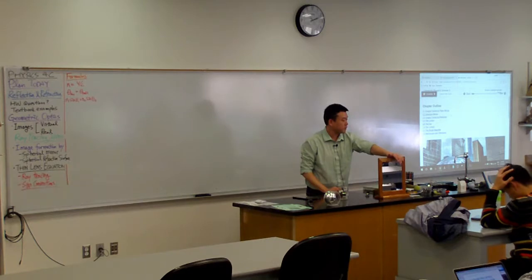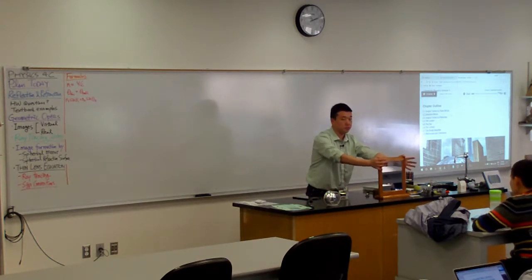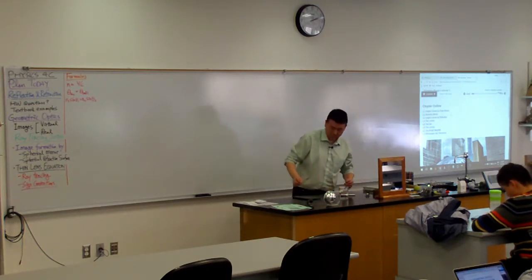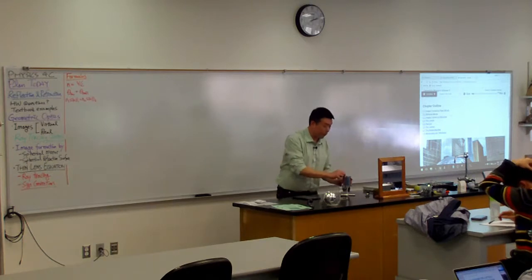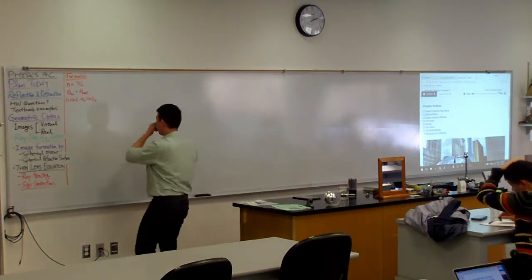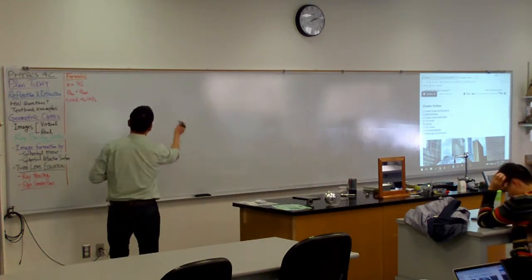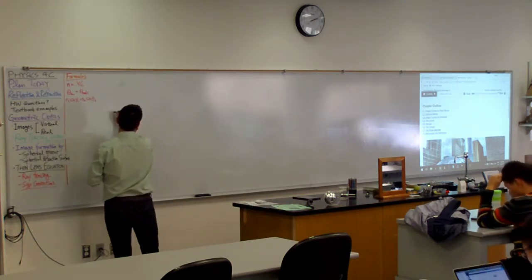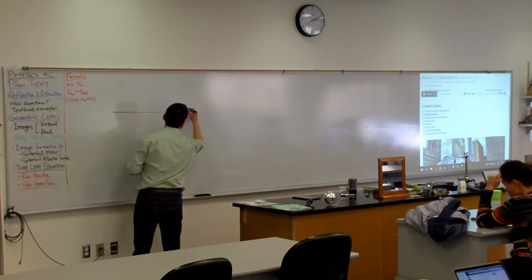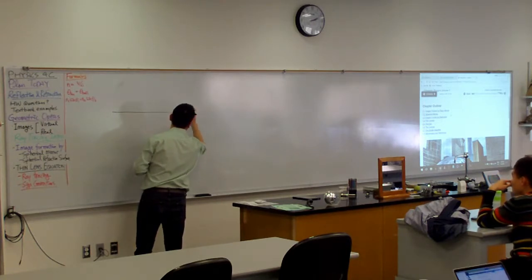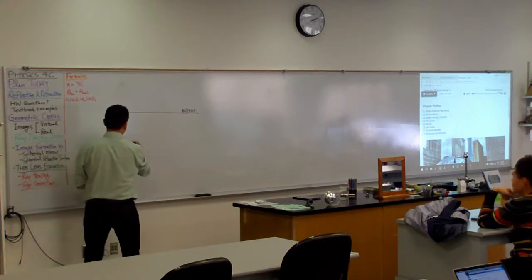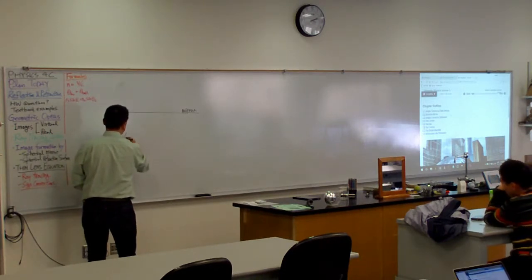But if you ignore how this optical element is modifying the light, it appears to be coming from a distance, coming from a particular place. So let me draw a diagram because it's hard to just point at things. So if you have a mirror, for example, and you have something or someone over here. I guess I'll draw a triangle.